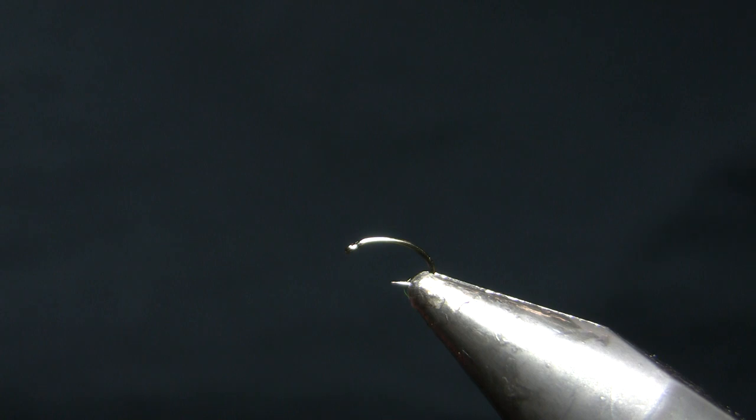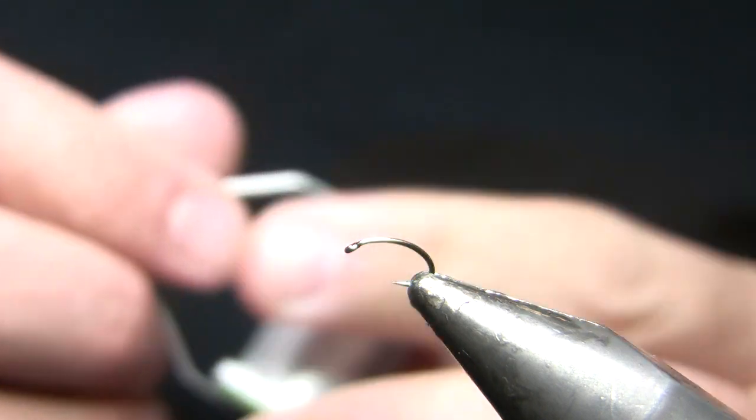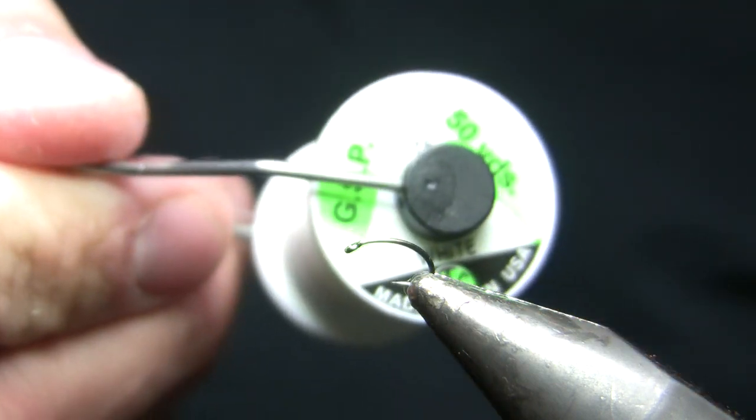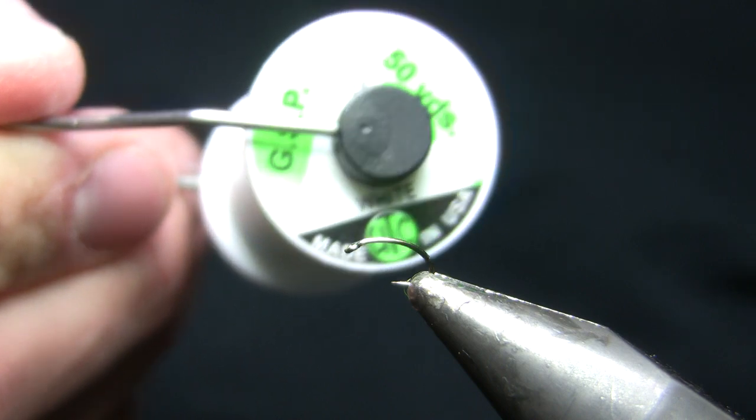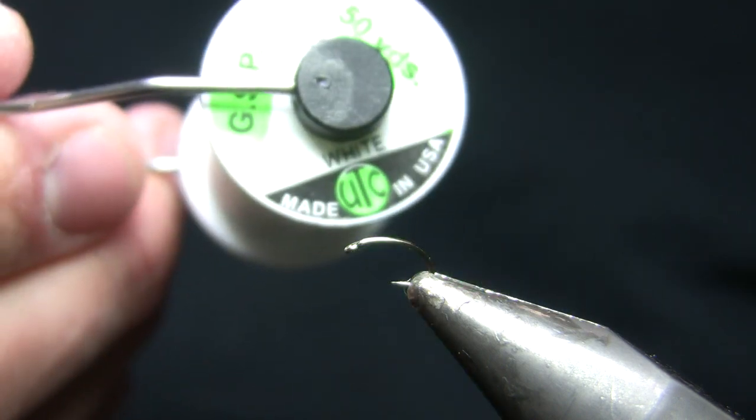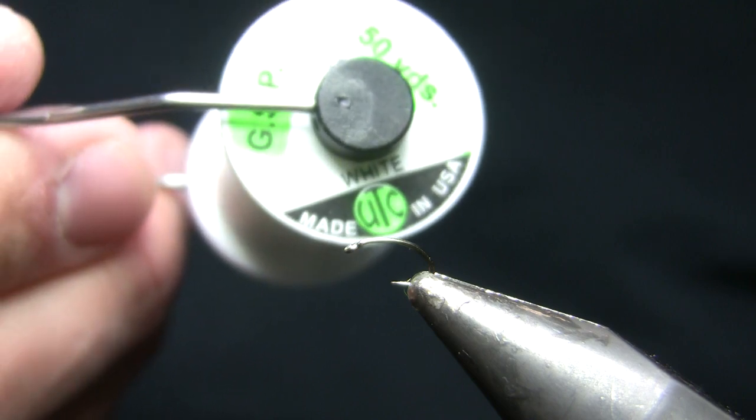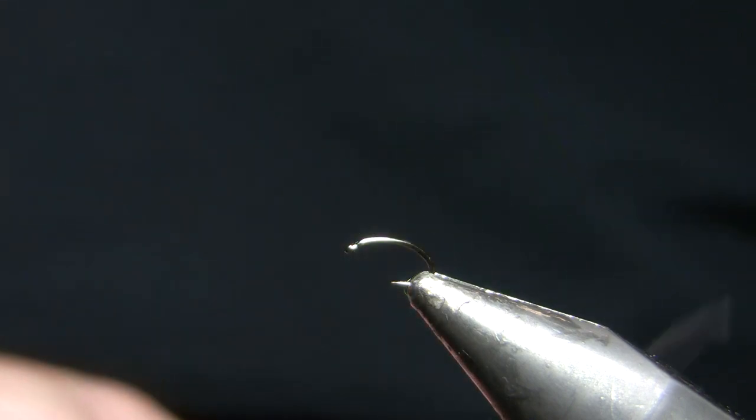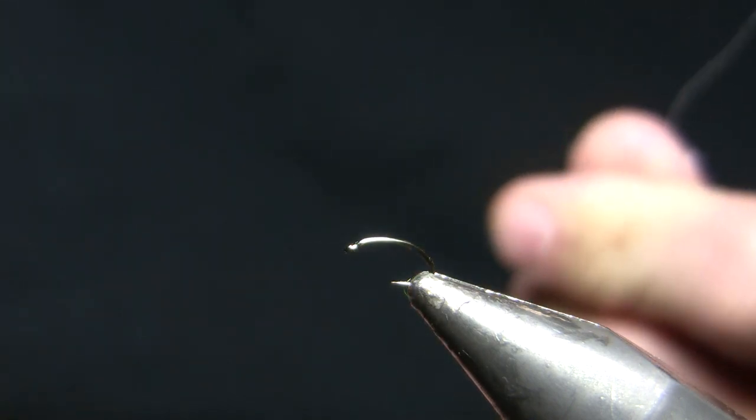My thread here, and this is kind of crucial, is going to be 75 denier gel spun in white. They don't make this in fire orange—I wish they did. They do make it in regular orange. You really need to use gel spun thread for this fly.